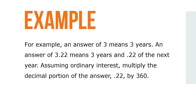For example, an answer of 3 means 3 years. An answer of 3.22 means 3 years and 0.22 of the next year. Assuming ordinary interest, multiply the decimal portion of the answer, 0.22, by 360. This gives 79.2, which represents the number of days. The total time of the loan would be 3 years and 80 days. Remember to always round up any fraction of a day.